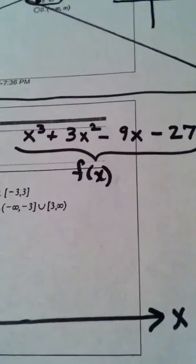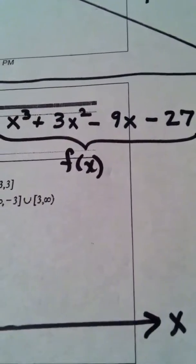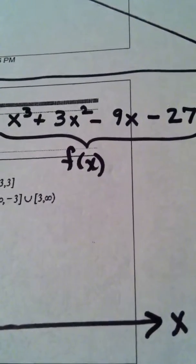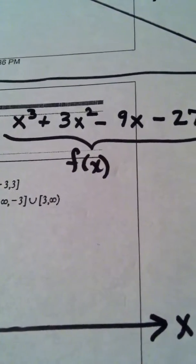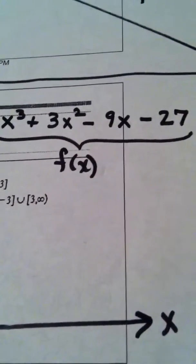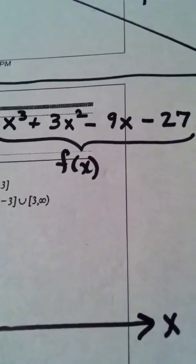I'm going to type in that function. So I'm going to go to my graphing calculator, and I'm going to type in, as I'm talking, I'm typing in x cubed plus 3x squared minus 9x minus 27.